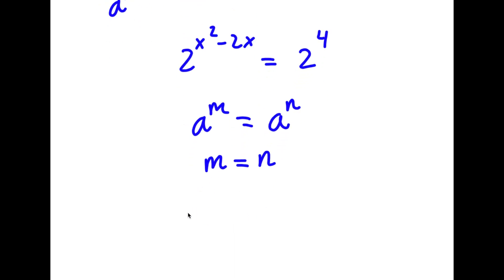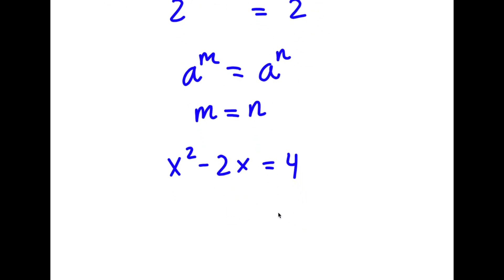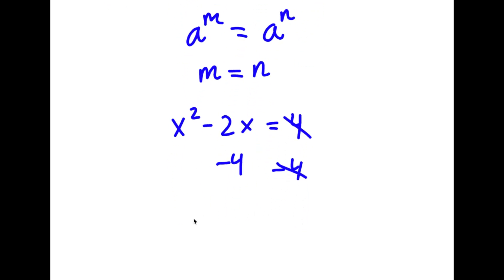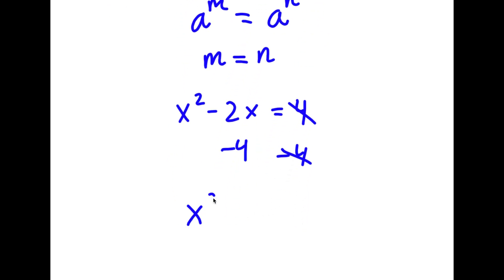So in this case, x squared minus 2x is equal to 4. If I subtract 4 on both sides, I get x squared minus 2x minus 4 is equal to 0.